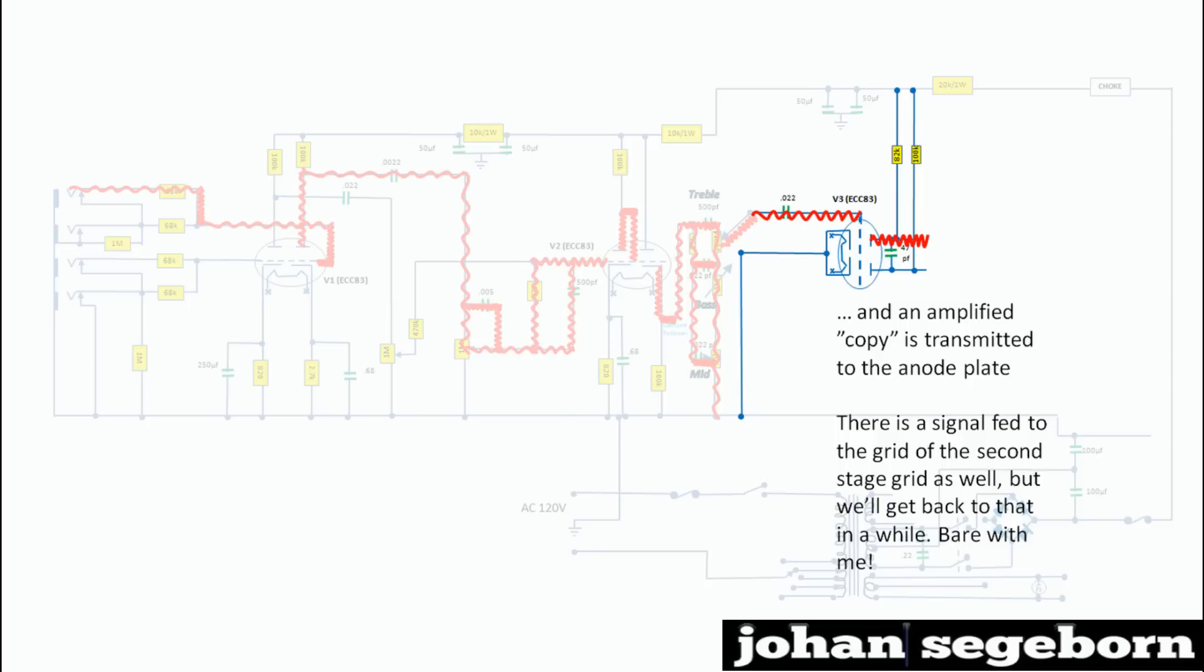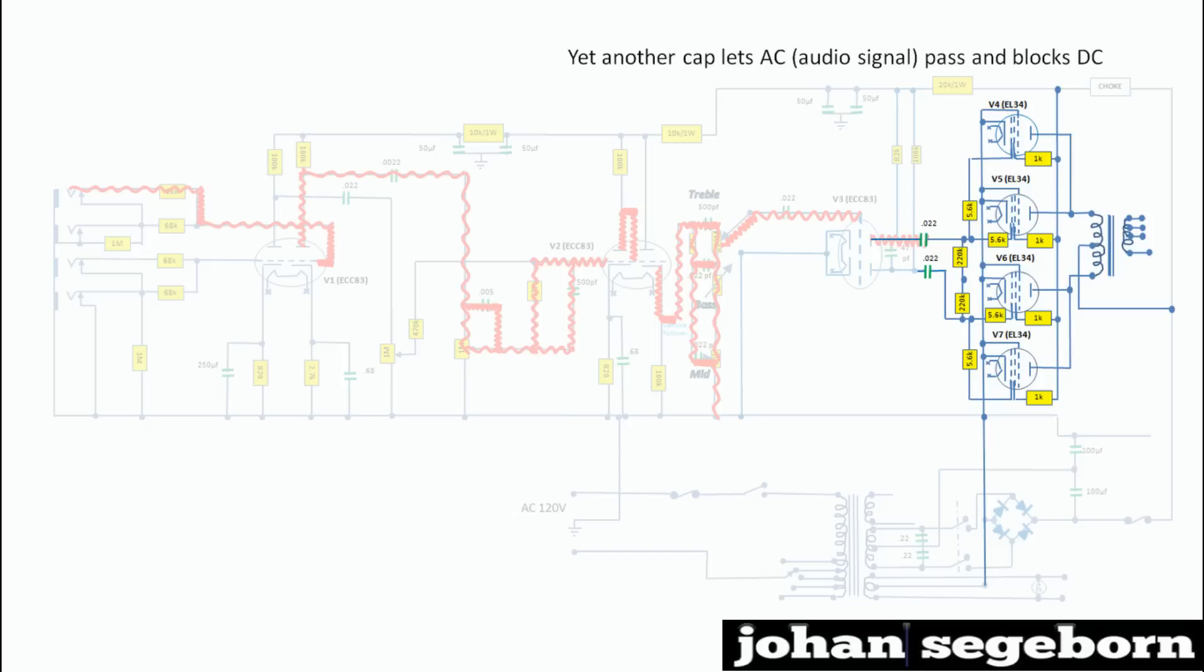And now, there is a signal fed to the grid of the second stage grid as well. But we'll get back to that in a while. We get another cap to block DC before the power stage. And then we pass the grid resistors of the power stage and feed the signal into the grid of the power tubes.